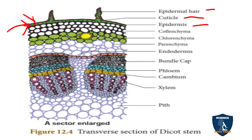Next is the hypodermis. You can see a few layers below the epidermis — this portion is the hypodermis. It is made up of collenchyma cells in the sunflower stem. The function of the hypodermis is to give mechanical support to the plant. Hypo means below, so below the epidermis these few collenchyma layers are found.